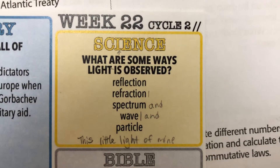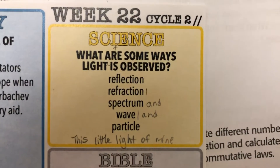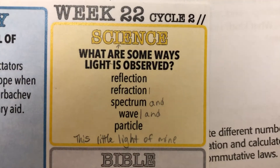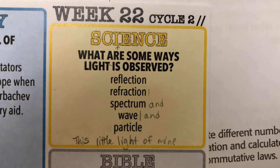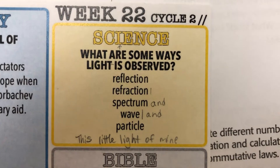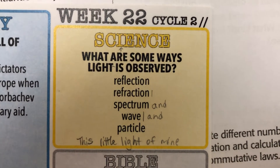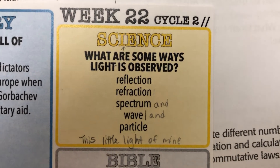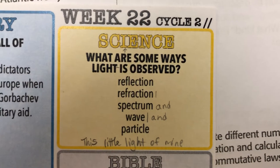CC Cycle 2, Week 22 Science. What are some ways light is observed? To the tune of This Little Light of Mine.